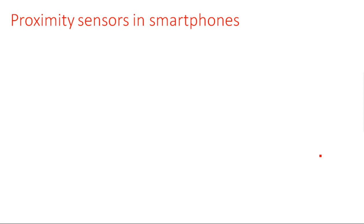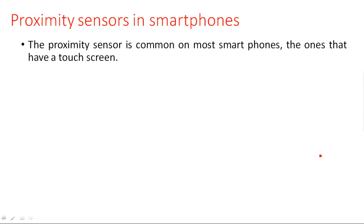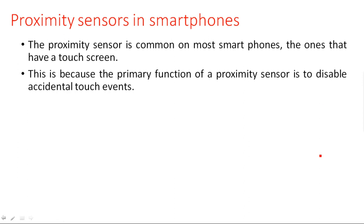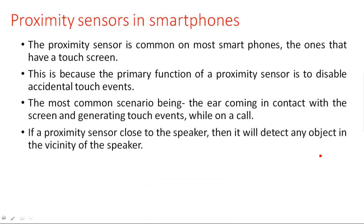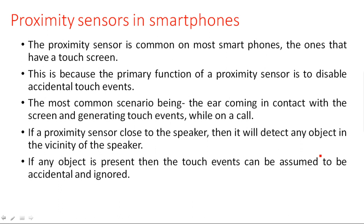Proximity sensors are commonly used in smartphones, specifically in those that have a touch screen. The primary function of the proximity sensor in smartphones is to disable accidental touch events — the most common scenario being the ear coming into contact with the screen and generating touch events during a call. If a proximity sensor is close to the speaker, it detects any object in the vicinity. If an object is present, touch events can be assumed to be accidental and ignored.